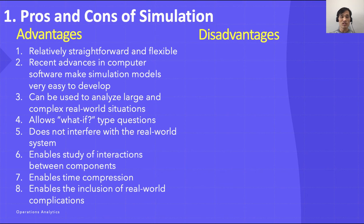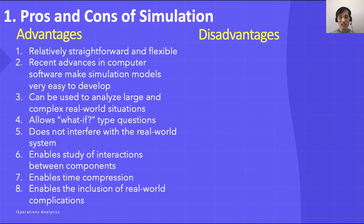Another advantage is that simulation allows what-if types of questions. Managers like to know in advance what options are attractive and what are not. With a computer, a manager can try out several policy decisions within minutes. Simulations also do not interfere with a real-world system — it may be too disruptive to experiment with new policies right away. However, simulating first lets us understand what to expect. Simulation also allows us to study the interactive effects of individual components or variables. By running it first, we may be able to understand those interactive effects.